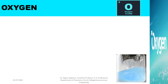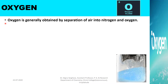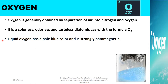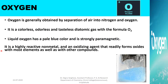Oxygen is generally obtained by the separation of air into nitrogen and oxygen. It is a colourless, odourless, tasteless, diatomic gas with the molecular formula O₂. The symbol for Oxygen is O, the atomic number is 8, and the mass number is approximately 16. Liquid Oxygen has a pale blue colour and is strongly paramagnetic.